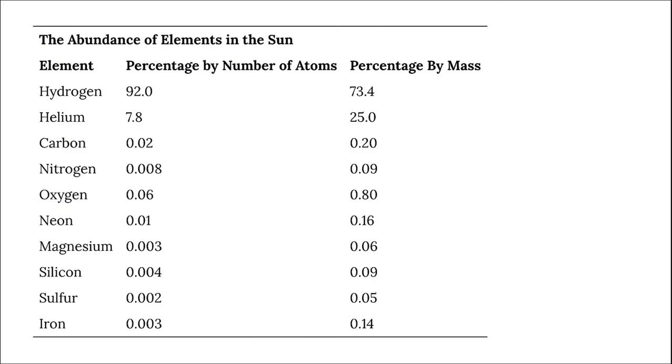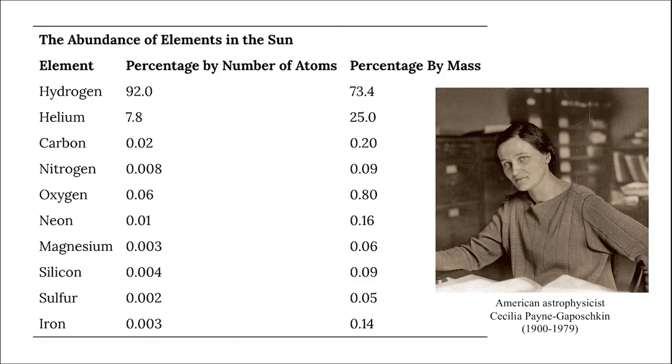This amazing work was first done by British-born American astrophysicist Cecilia Payne-Gaposchkin, who earned her PhD in 1925 for her discovery that stars were composed mainly of hydrogen and helium. To date, about 67 individual elements have been detected in the chemical composition of the Sun.